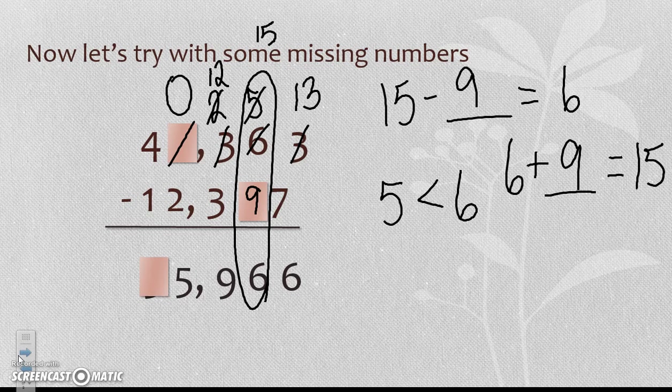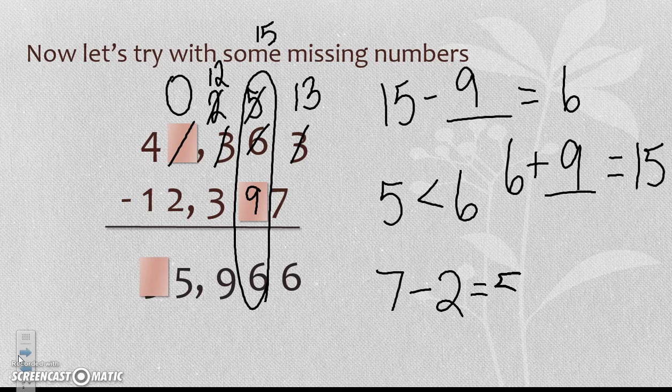Let's go to the next place value in the thousands place. I know that I'm taking 2 from something to get to 5. Well, I know that 7 minus 2 is equal to 5.